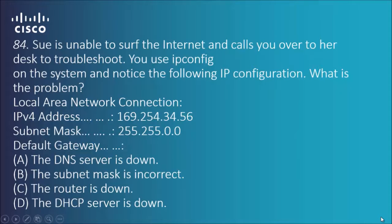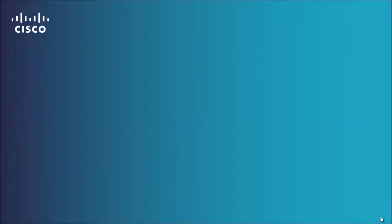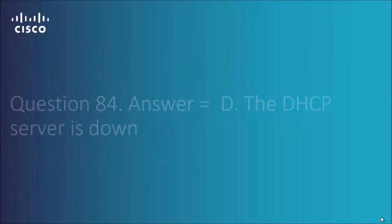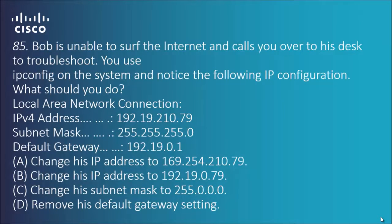Looking at this one, we've got an IPv4 address which is an APIPA address — a private address. It was generally supposed to have like a 192 or 10.0.0.0 network. We have an APIPA address, and normally if you see an address like that it generally means there's a problem with the DHCP server. So the answer is D — the DHCP server is down.